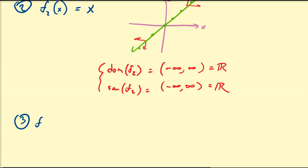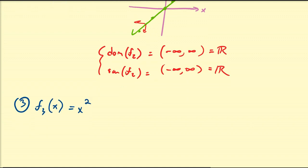The next most common function, f₃(x), is equal to x squared. When x is equal to 0, y is equal to 0 squared, which is 0. 1 squared is 1, 2 squared is 4, negative 1 squared is 1, and negative 2 squared is 4. If you connect all these points, you get what we call a parabola.